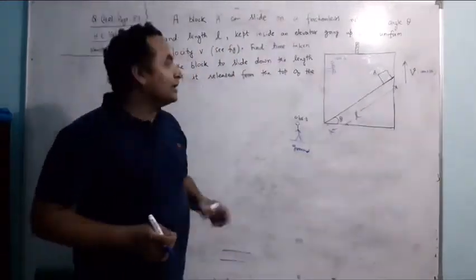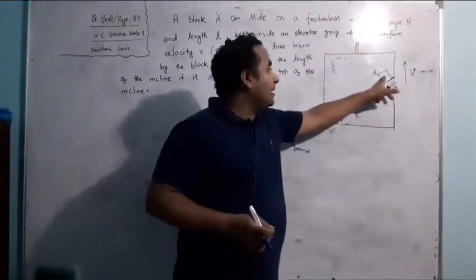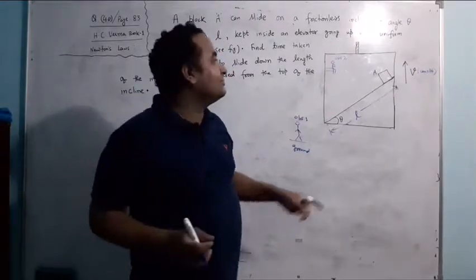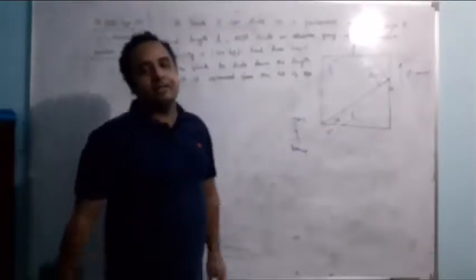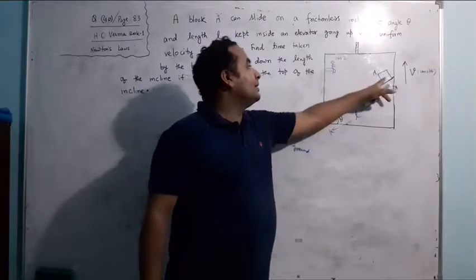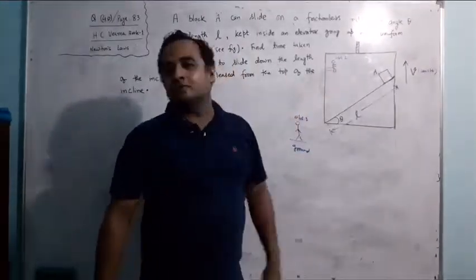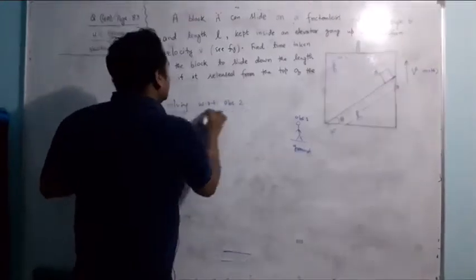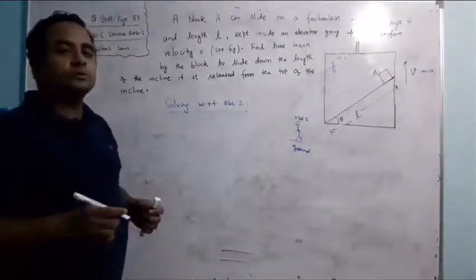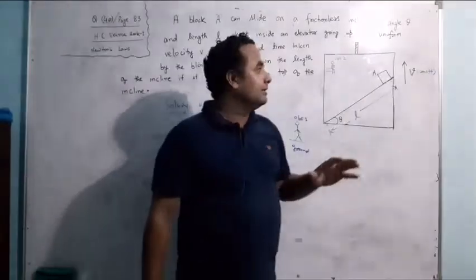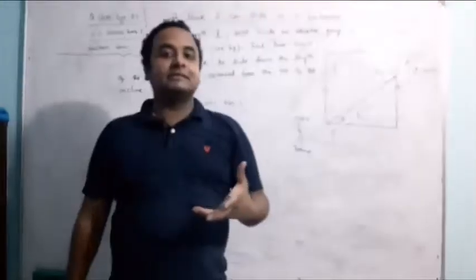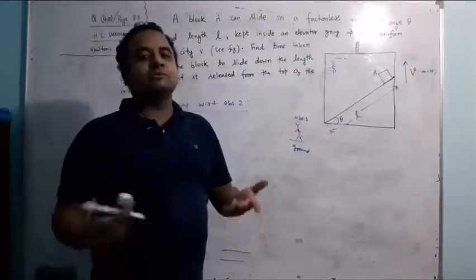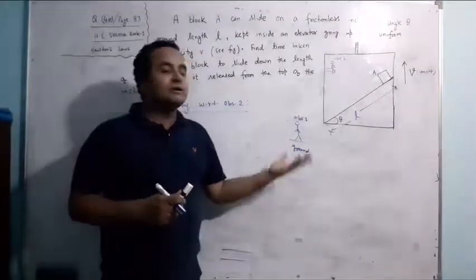It is better to solve with respect to Observer 2. For Observer 1, the path of the object from top to bottom is not a straight line because it is also moving upward. For Observer 2, the displacement is simply L. Now, if the elevator were accelerating upward, then this frame of reference would be non-inertial and we would need pseudo force. But here there is no acceleration — it's constant velocity — so no pseudo force is needed.